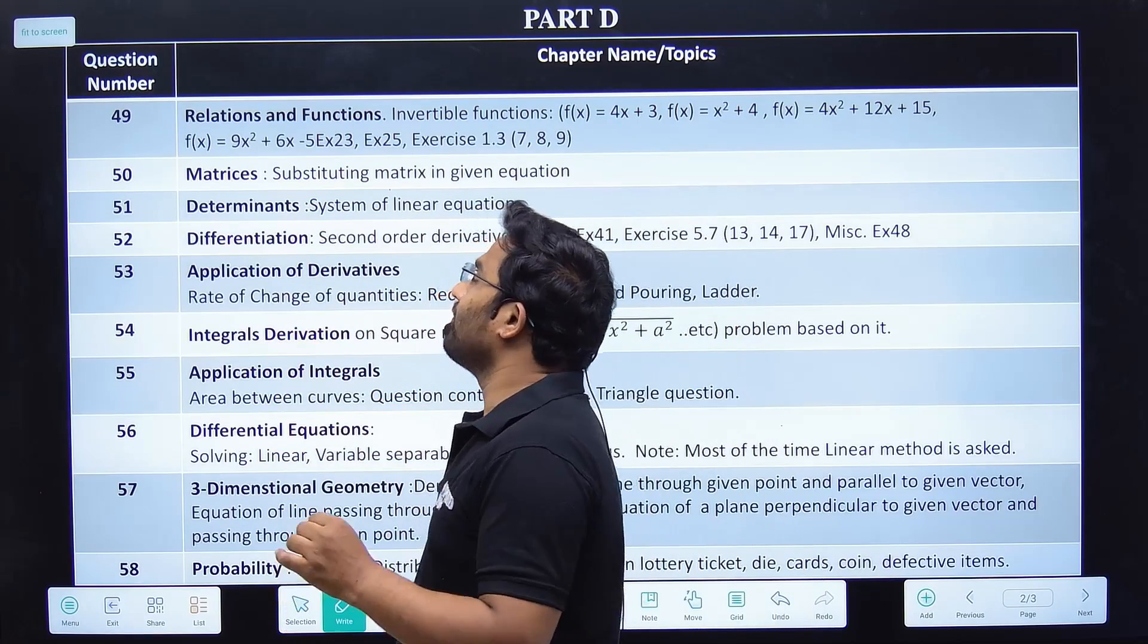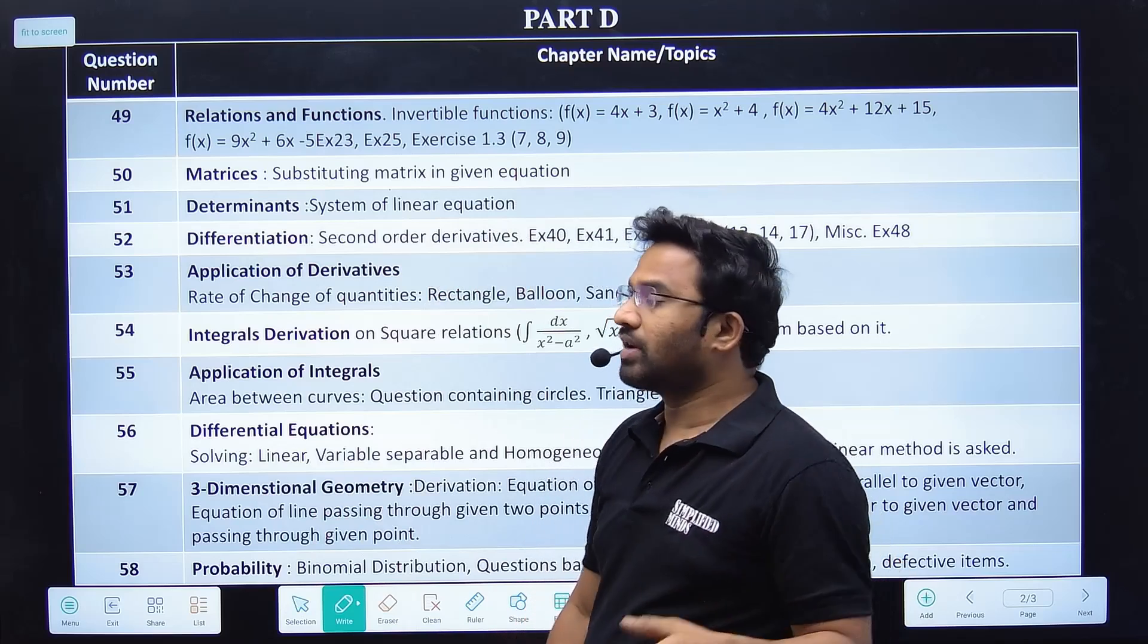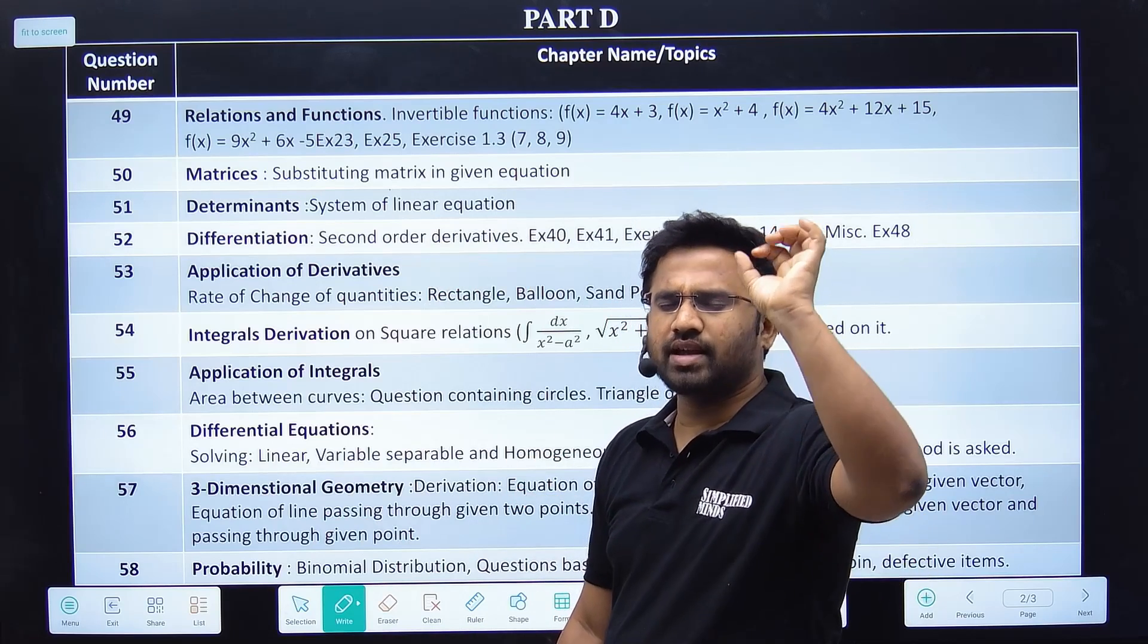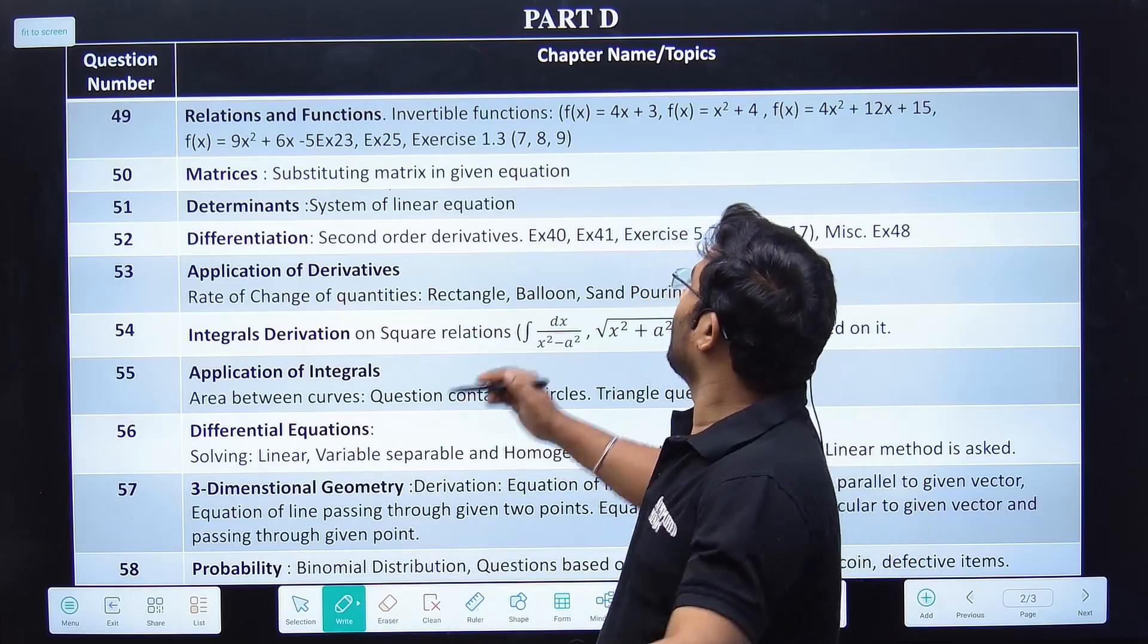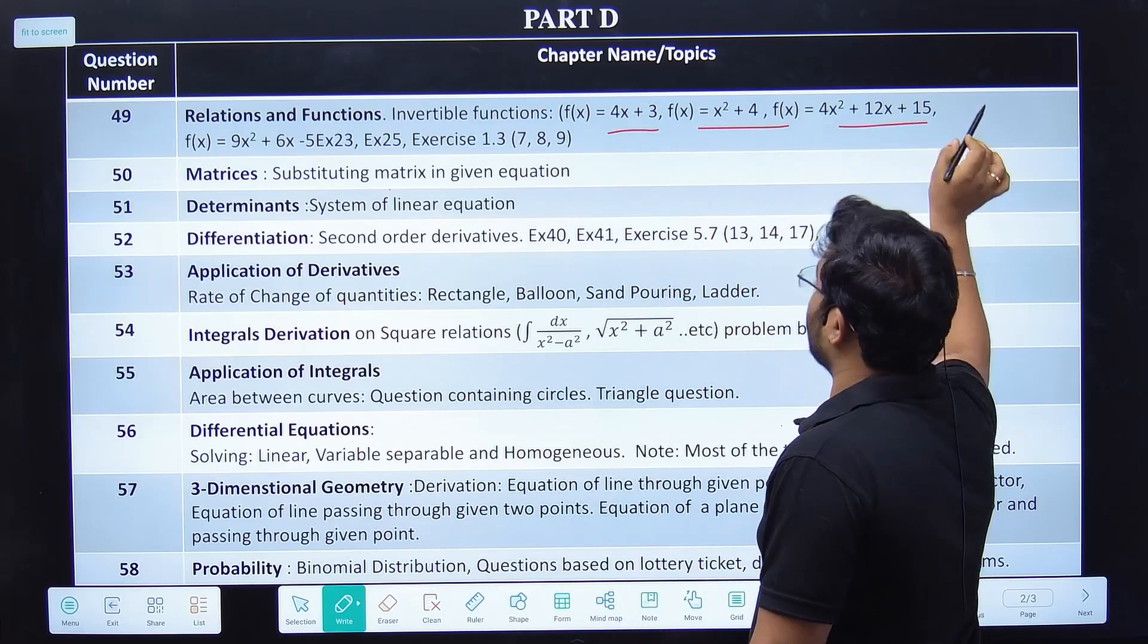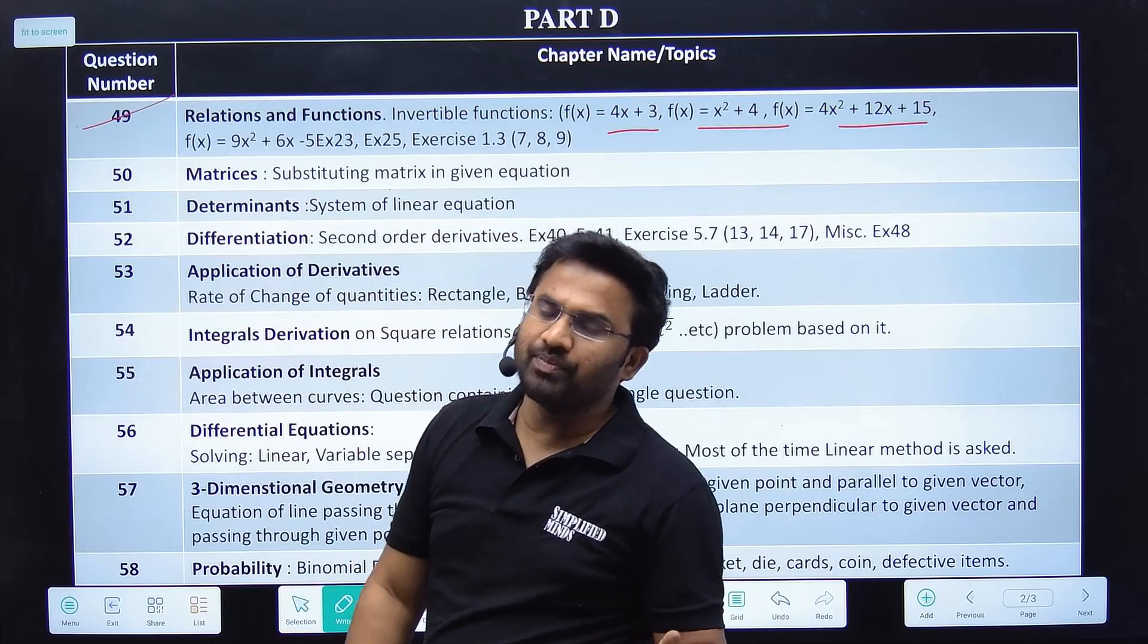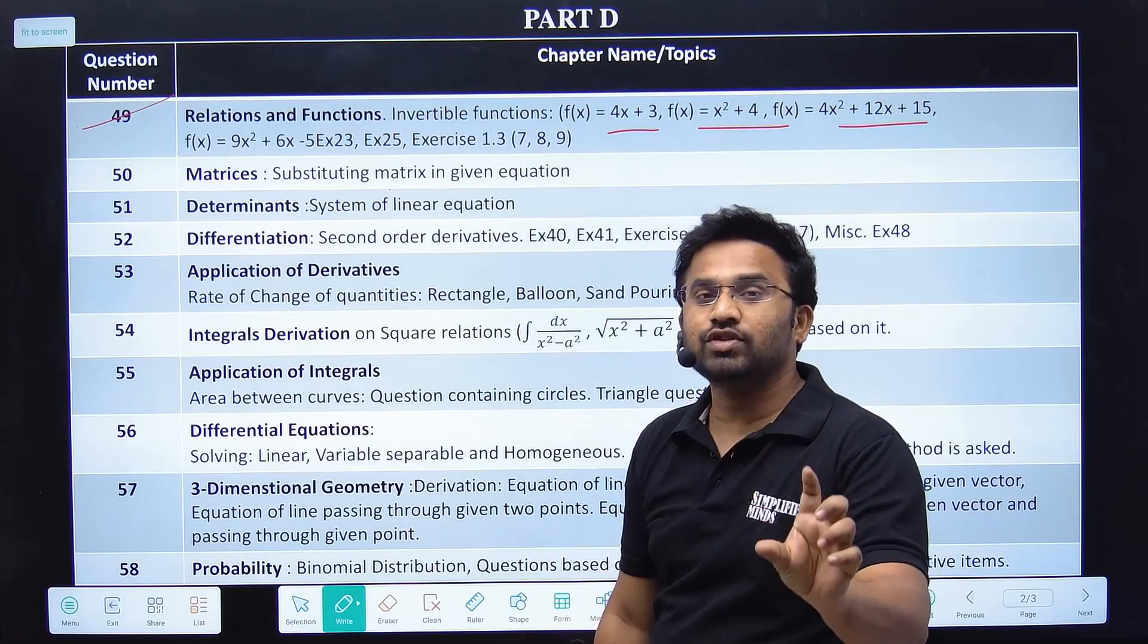First thing is Part D. Question 50, Relations and Functions - very easy question. Same question repeats often, for example f(x) = 4x + 3 / x² + 4. Many of you are able to answer this question most of the time, and most of you are losing marks because you're not writing properly.